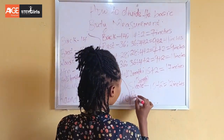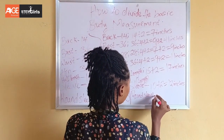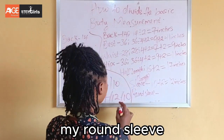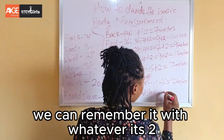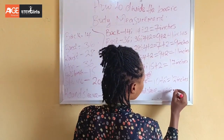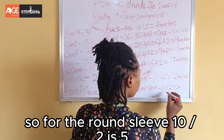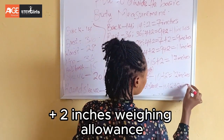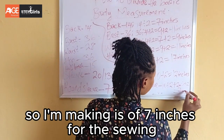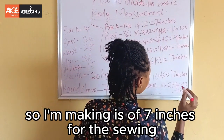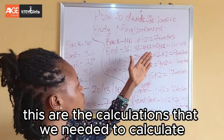For the round sleeve, since I'm using a short sleeve of 10 inches, the round sleeve will be divided by 2 plus 2 inches sewing allowance. So 10 divided by 2 is 5, plus the 2 inches sewing allowance gives me 7 inches. So I'm making use of 7 inches for the round sleeve.